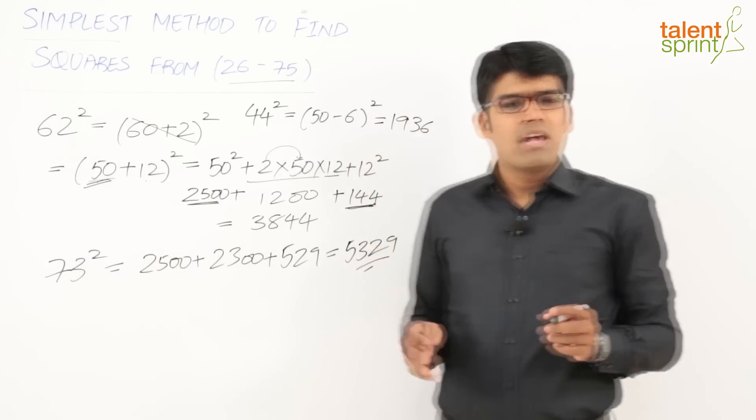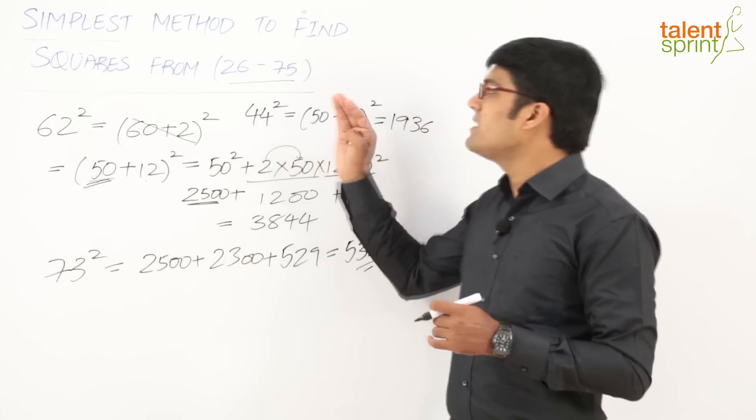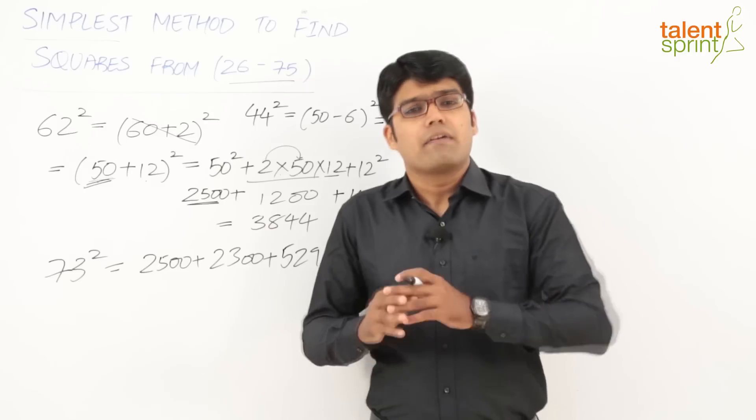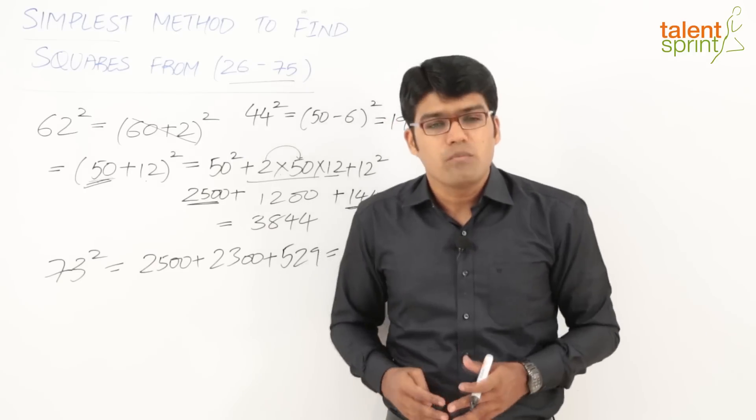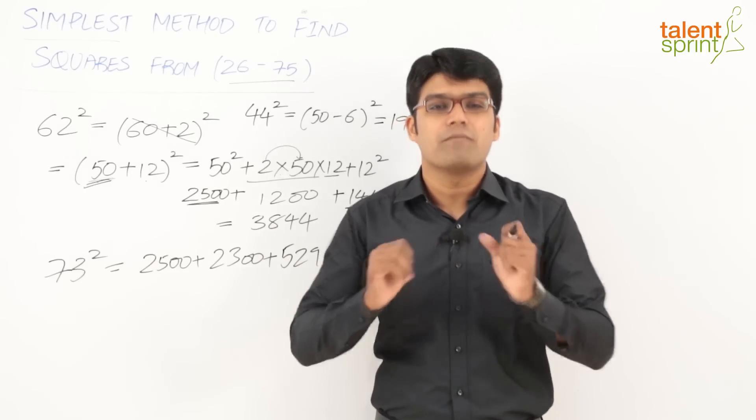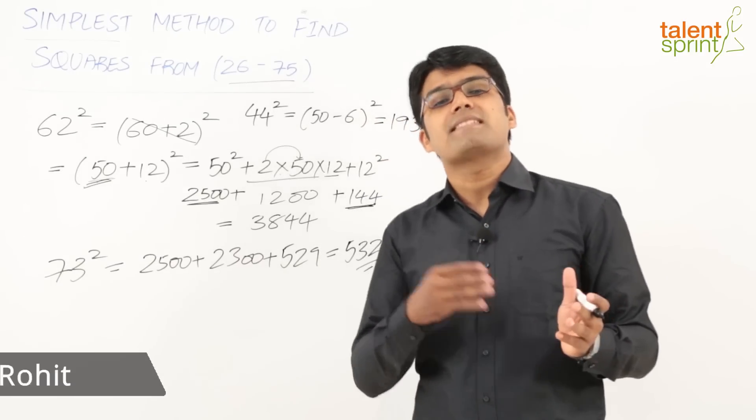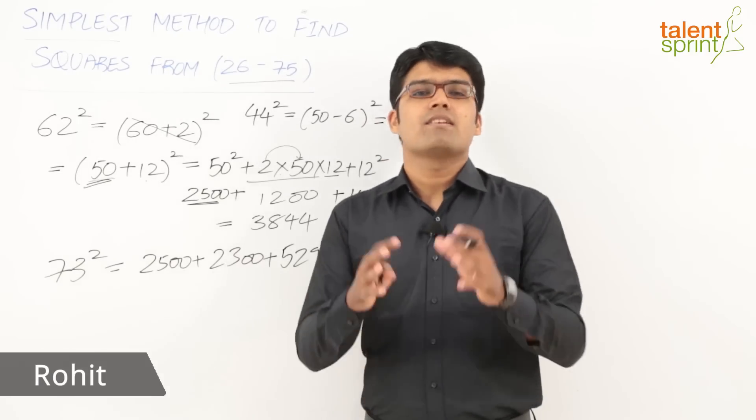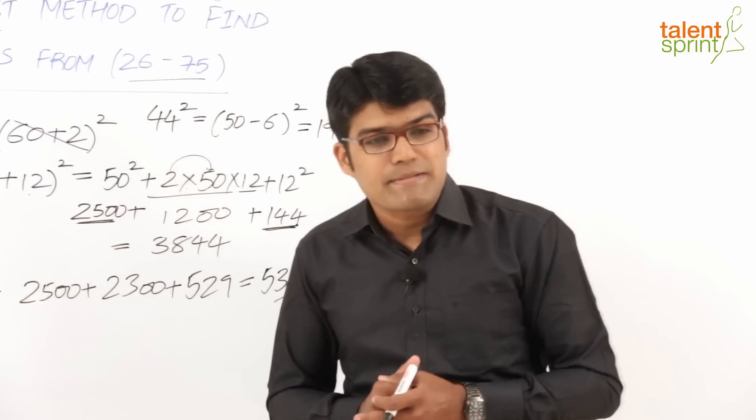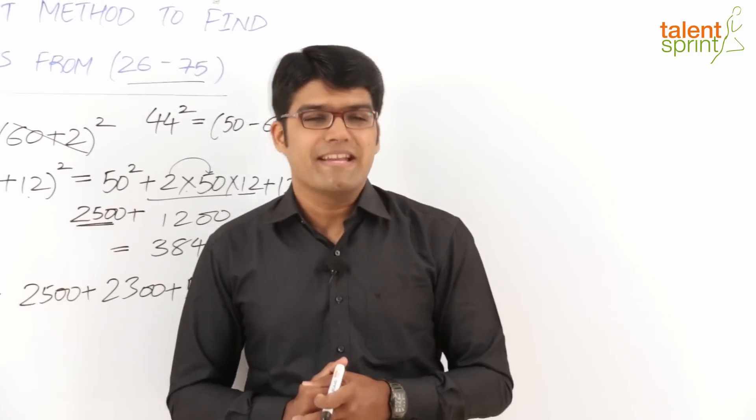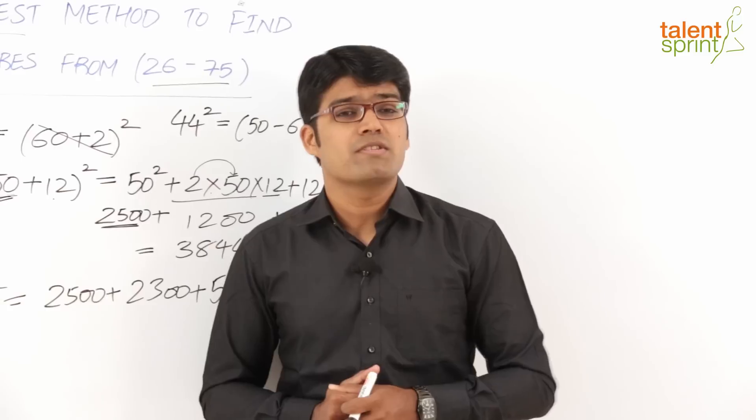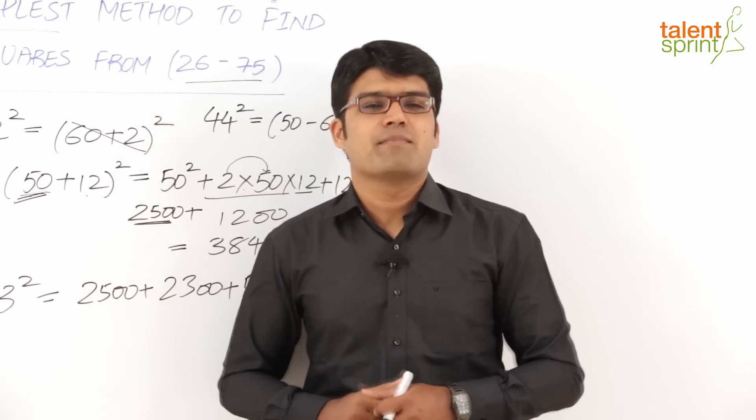So as you can see through these examples, finding out the squares of numbers between 26 to 75 is really very easy to do if we take the first term as 50. That is, always break the numbers as (50 + x)² or (50 - x)². I hope all of you have followed this simplest method to get the squares of numbers between 26 to 75, and I hope you will be using it in your calculation from the next time onwards.